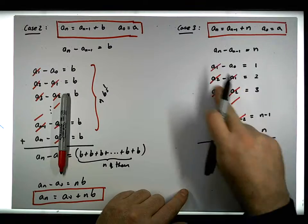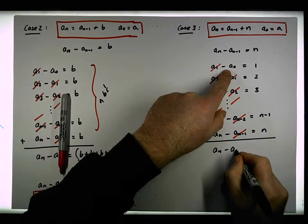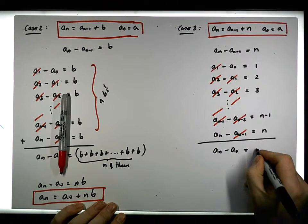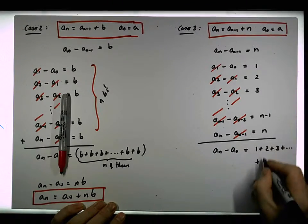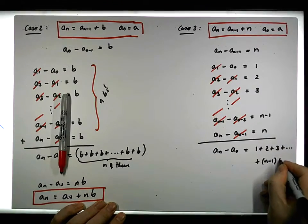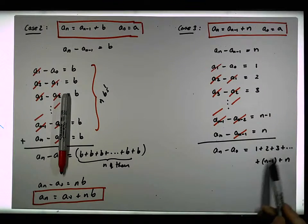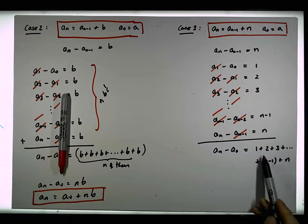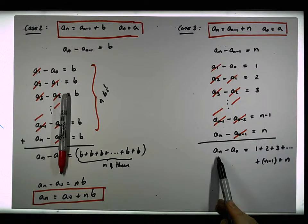Effectively, what we're left with on the left-hand side is a_n minus a_0 must be equal to... Now, we have to sum all of these values up. So it's 1 plus 2 plus 3 plus dot dot dot plus n minus 1 plus n. And this is the sum of the natural numbers, the sum of the first n natural numbers. Now, this isn't any good for us at this particular stage. If we knew what the sum of the first n natural numbers were, well, then we could actually solve this for a_n.